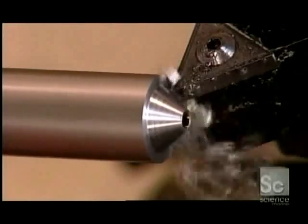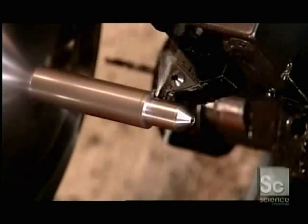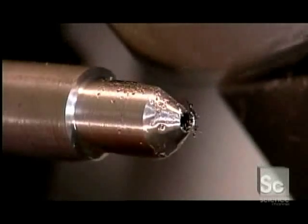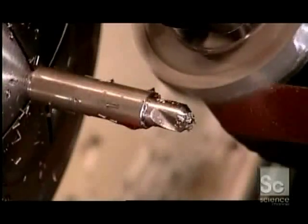Next it uses what's called a rough turning tool to shape the countersink's angled nose, then its body. The machine now switches to a milling cutter. This tool shapes the countersink's four blades.